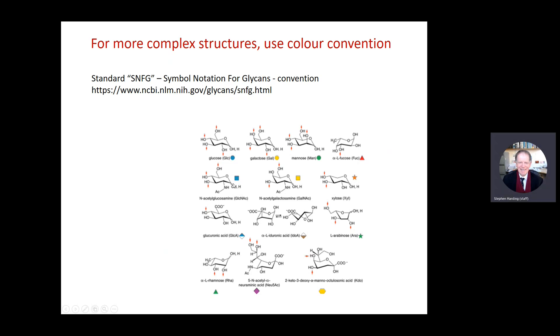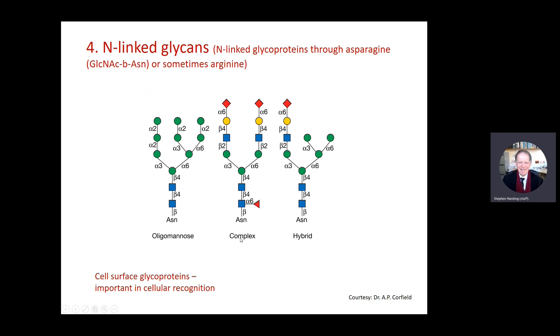GlcNAc, N-acetylglucosamine is a blue square, yellow square is N-acetylgalactosamine, xylose this star here, then you've got N-acetylneuraminic acid, this purple triangle which is a type of sialic acid and then some more diamond shapes and then you've got this hexagon, a complex looking monosaccharide residue here. So this is an example of the use of this notation for describing these N-linked glycans.